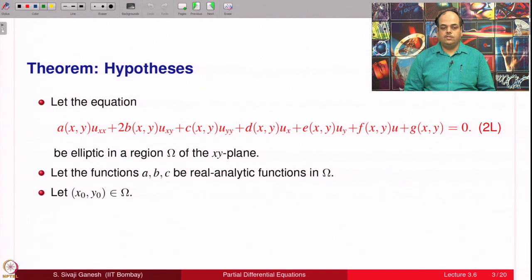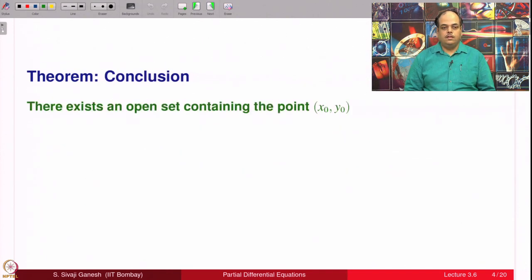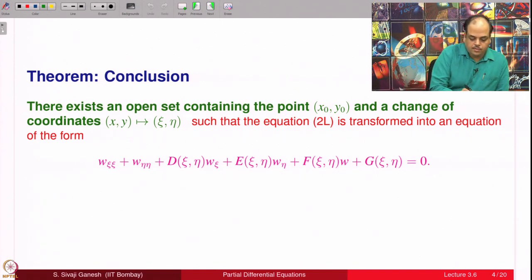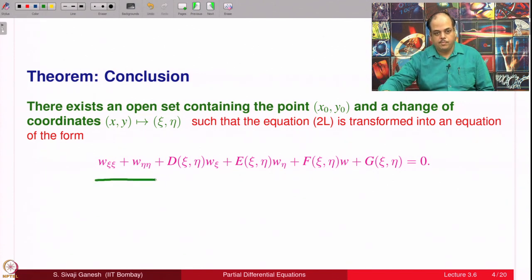Let (x_0, y_0) belong to omega. There is an open set containing the point (x_0, y_0) and a change of coordinates such that 2L gets transformed into this equation. Observe this part where the second order partial derivatives appear: w_ξξ + w_ηη looks like u_xx + u_yy, and no mixed partial derivative w_ξη does not appear in this equation. This is what is called a canonical form for elliptic equations.